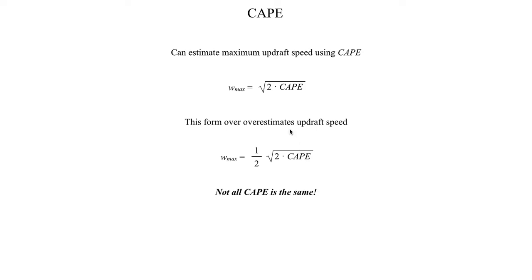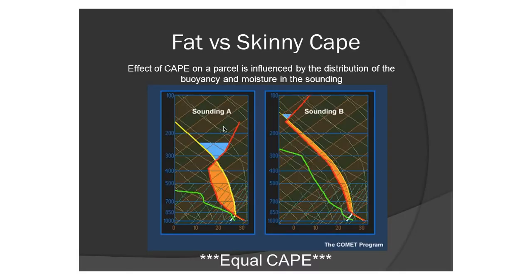An important point to emphasize is that not all CAPE is the same. This graphic from Comet — a prominent online learning platform for meteorology — shows two soundings where the orange shaded area represents the CAPE. In both soundings, the amount of CAPE is the same — roughly 2,500 joules per kilogram. However, in sounding A, the CAPE is distributed over a much smaller depth in the atmosphere, while in sounding B, that same CAPE is distributed over a much larger depth.